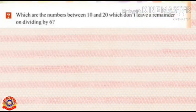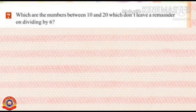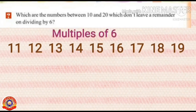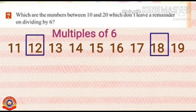Students, listen to this question. Which are the numbers between 10 and 20 which don't leave a remainder on dividing by 6? Let's write the numbers between 10 and 20: 11, 12, 13, 14, 15, 16, 17, 18 and 19. Among these numbers, find the multiples of 6. That means which numbers come in the multiplication table of 6? Yes, 12 and 18. These numbers can be divided by 6 without any remainder.